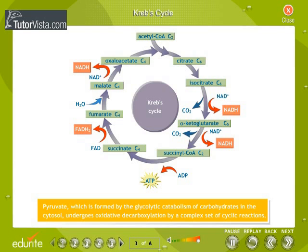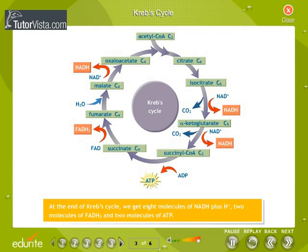At the end of the Krebs cycle, we get eight molecules of NADH+H⁺, two molecules of FADH₂, and two molecules of ATP.